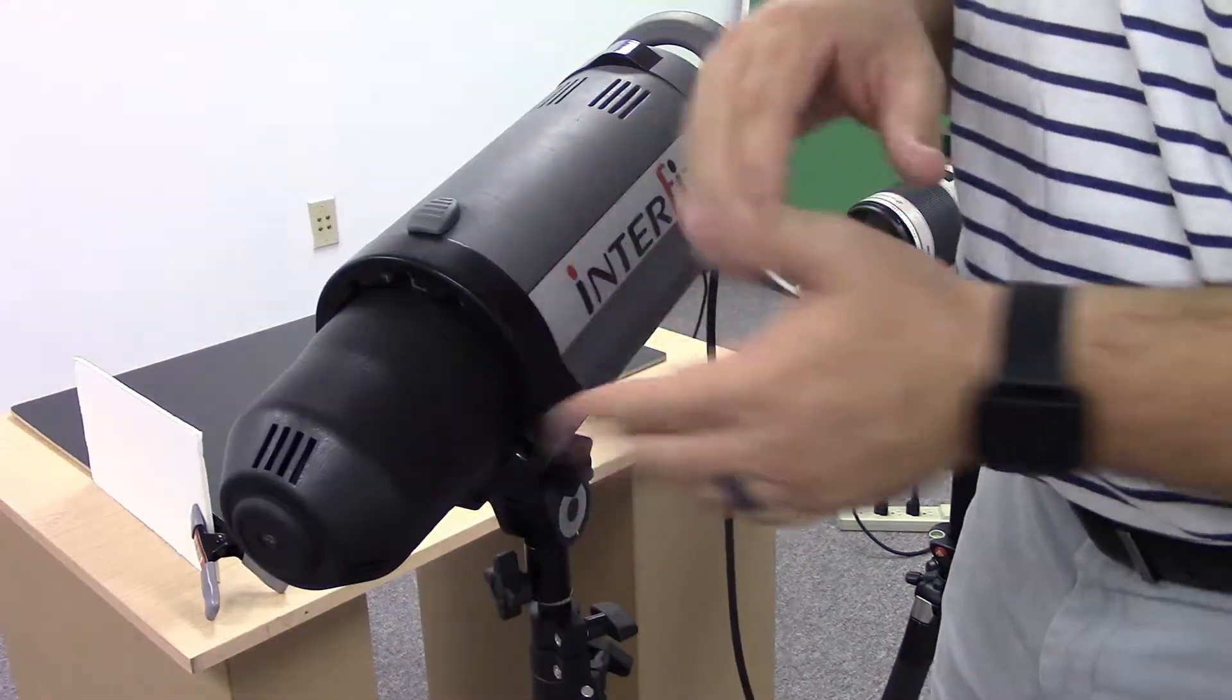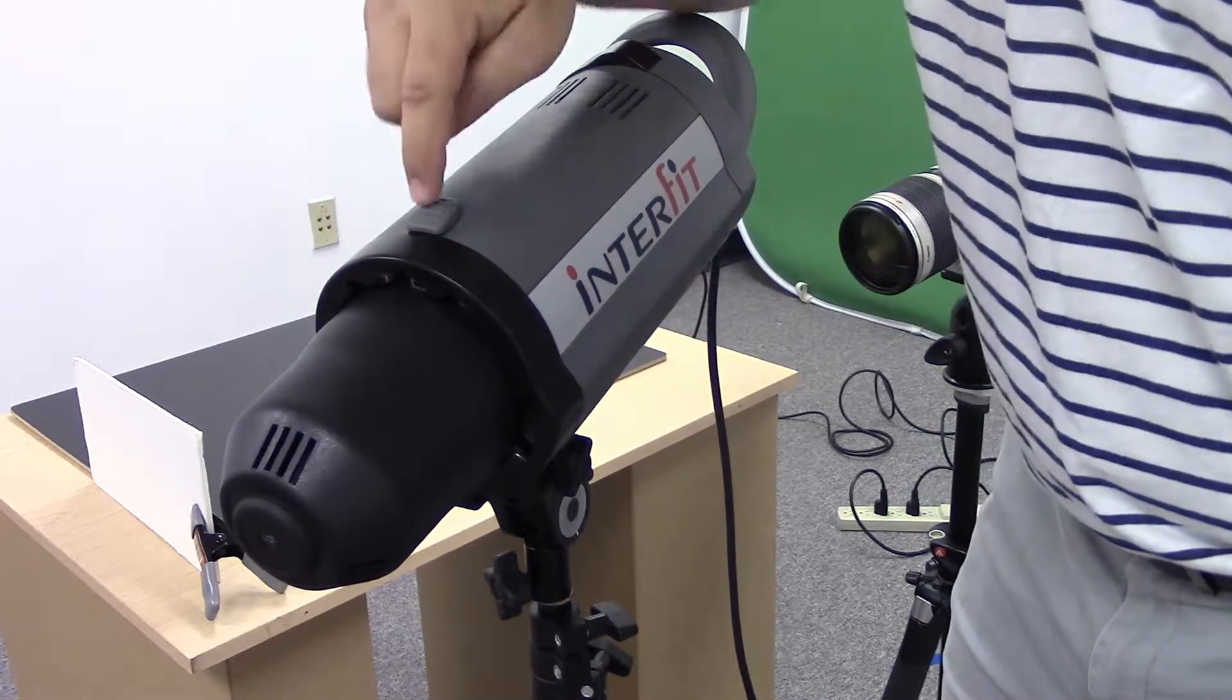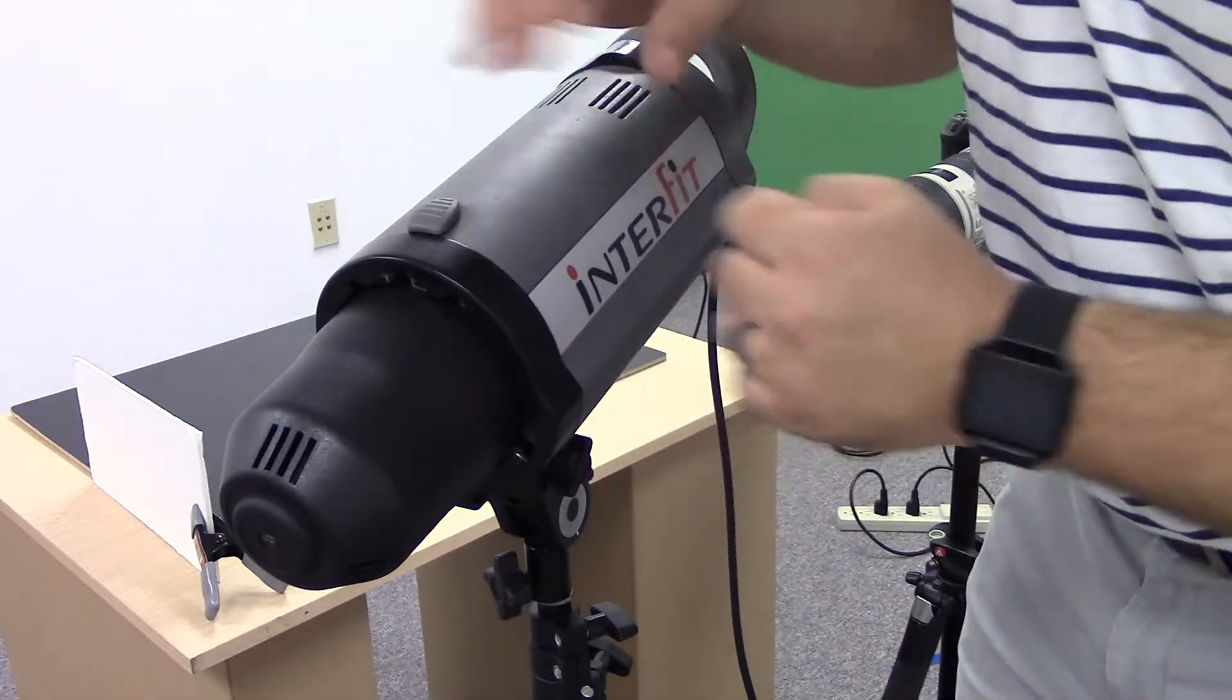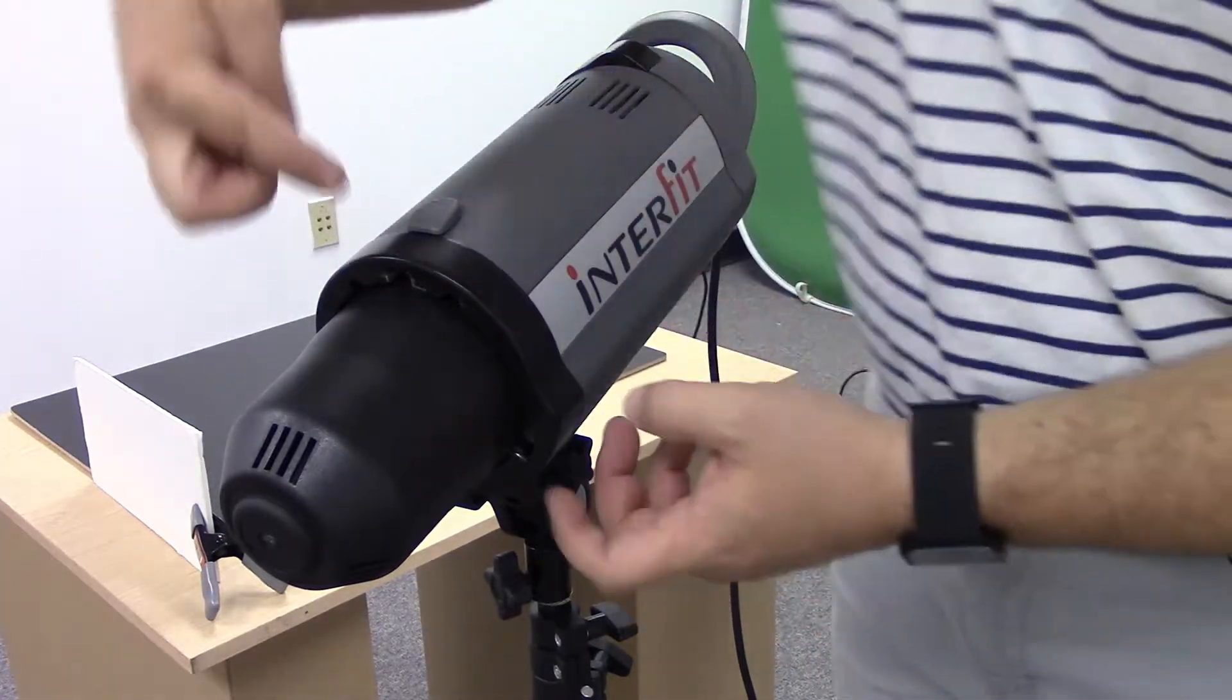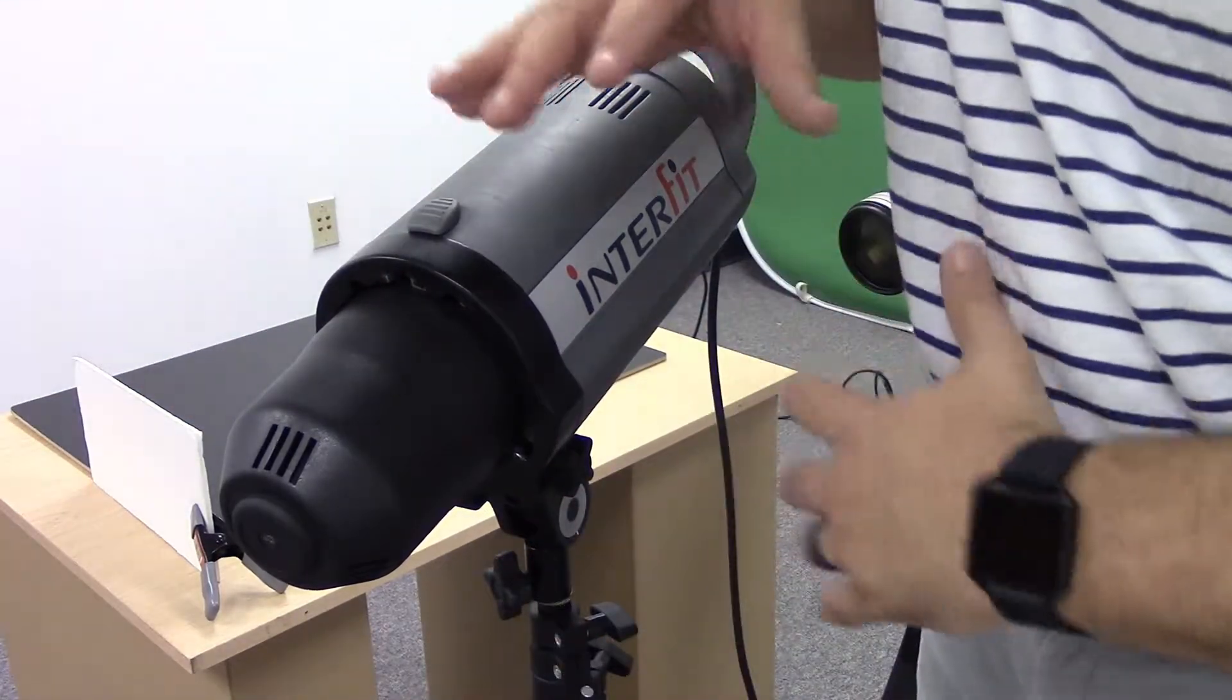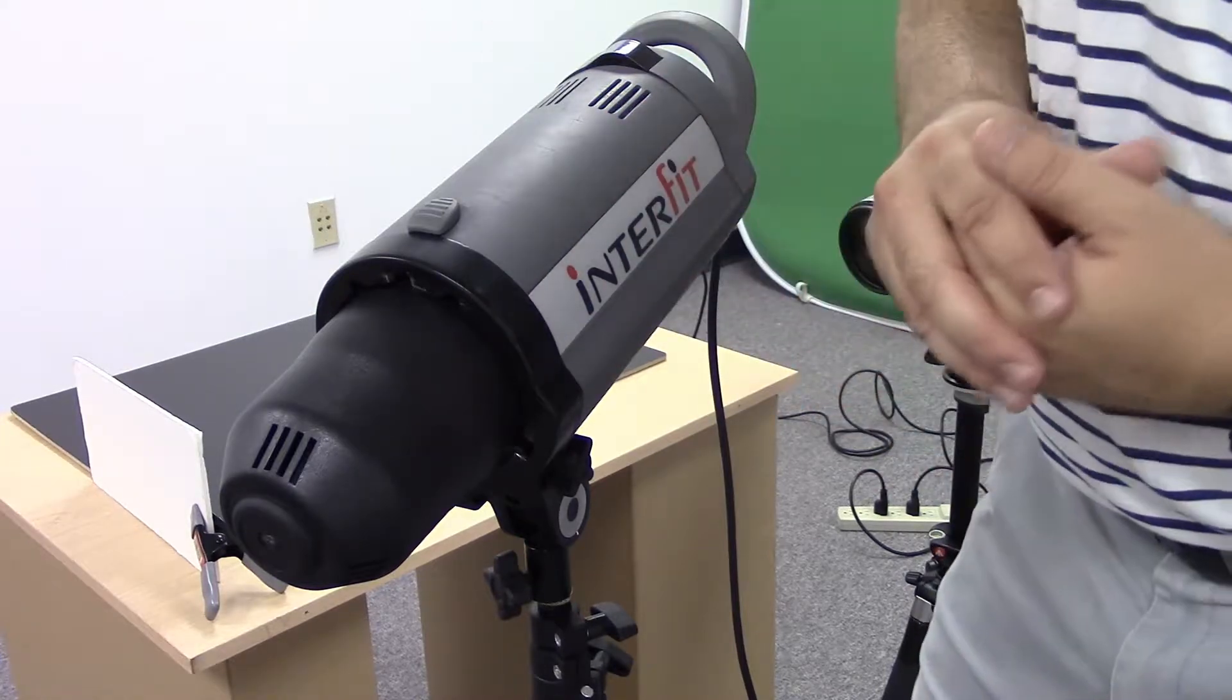This is the cover for the bulbs. This right here is the lock for the cover and also the lock for the modifiers that we'll put on in a second. This type of mount is called a bowing mount. There are three prongs in here and you have to make sure that those lock when you're putting a modifier on so that it doesn't fall off and break your bulbs.